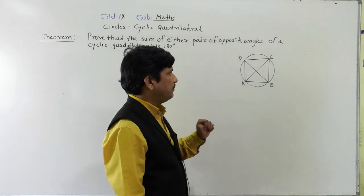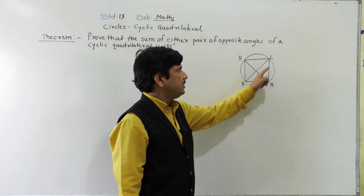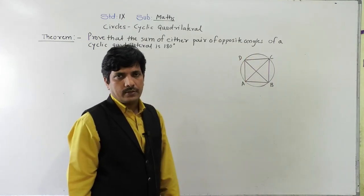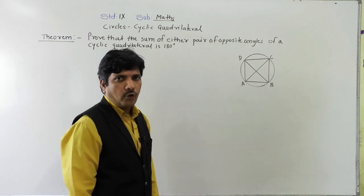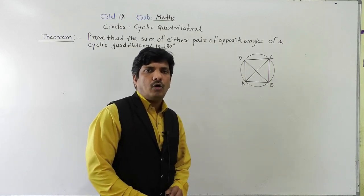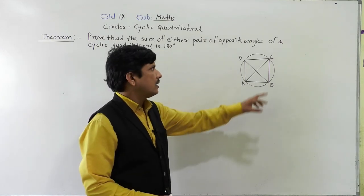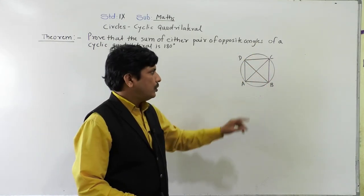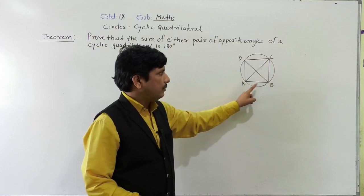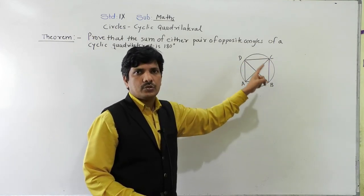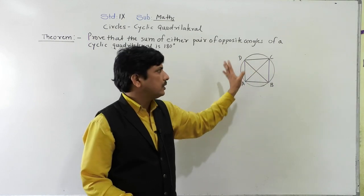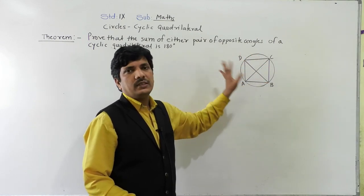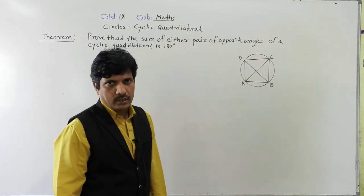Let us see the cyclic quadrilateral. Here, ABCD is a cyclic quadrilateral. About this figure we can say ABCD is a cyclic quadrilateral, meaning all the vertices of quadrilateral ABCD are on the circle. Points A, B, C, and D are on the circumference of the circle. So, we can say quadrilateral ABCD is a cyclic quadrilateral.